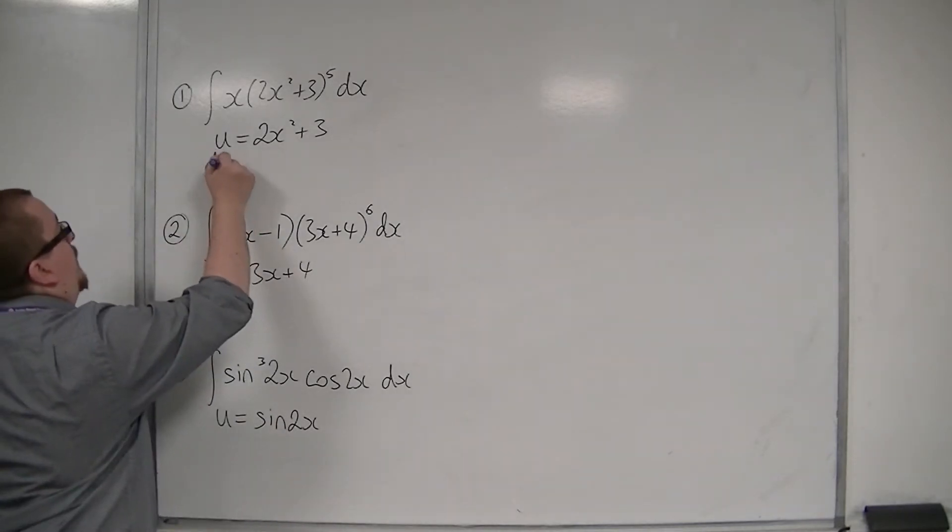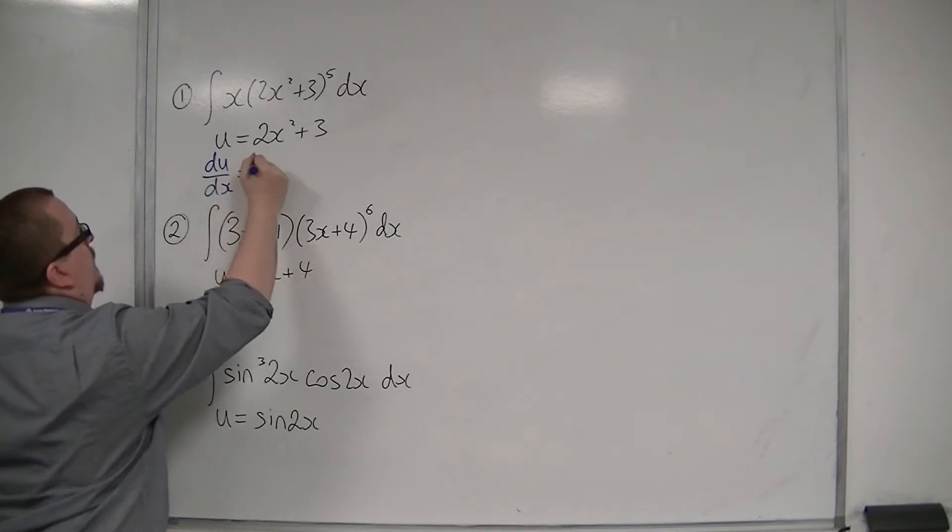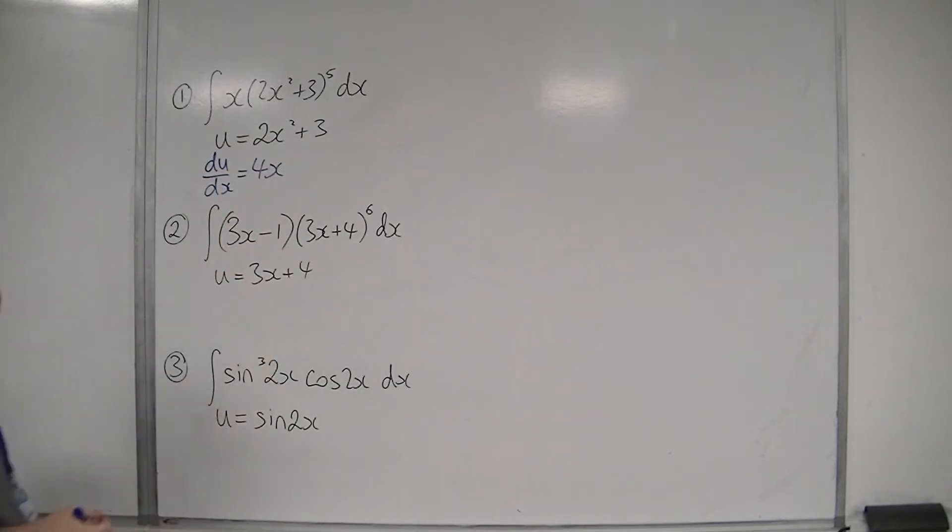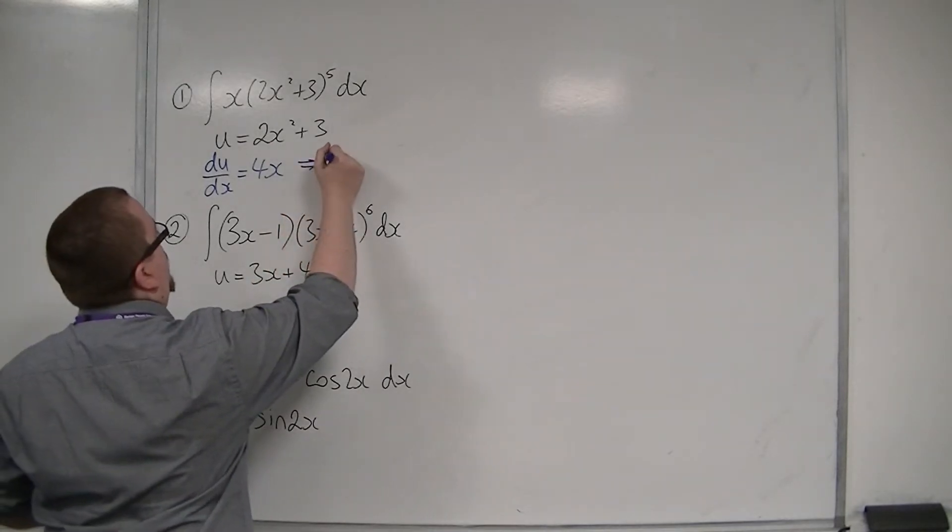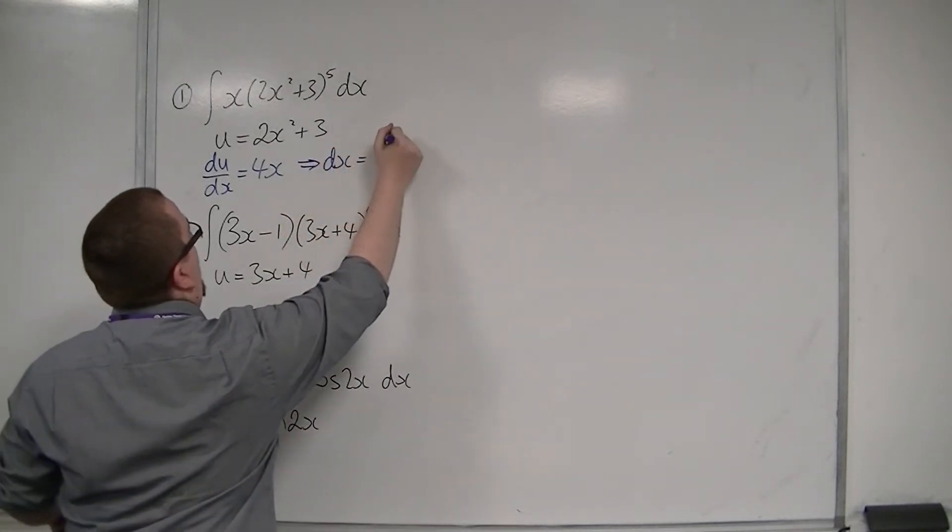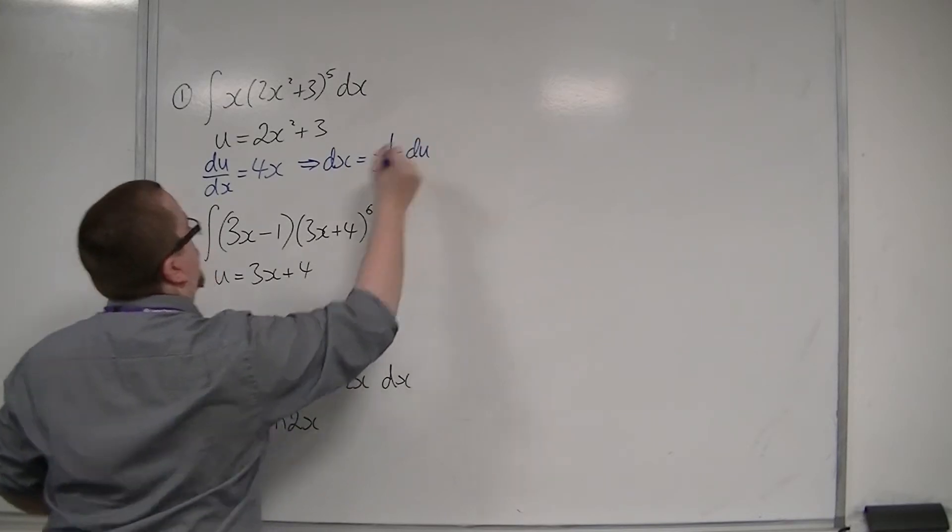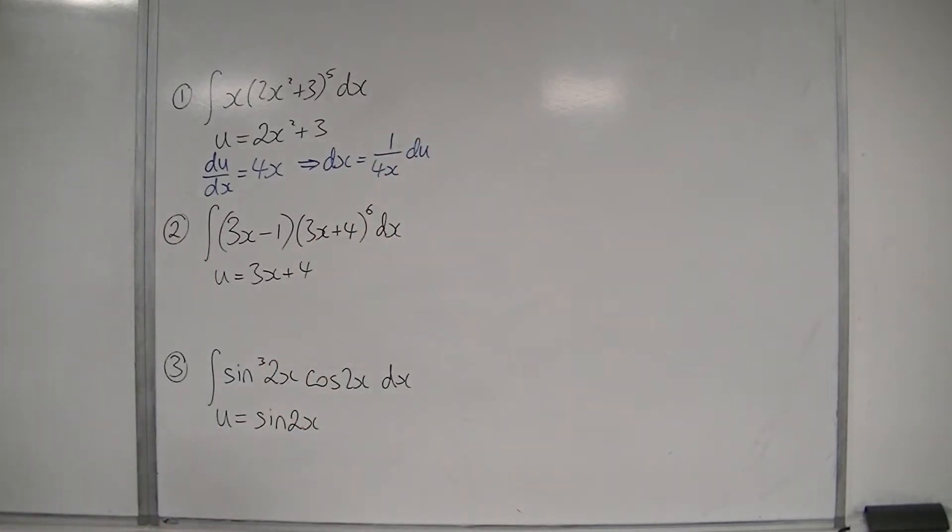So we find du/dx first, and always first. That's 4x. And so if I then rearrange this to get dx equals, then dx will be 1/(4x) du. So I now have a substitution for dx.